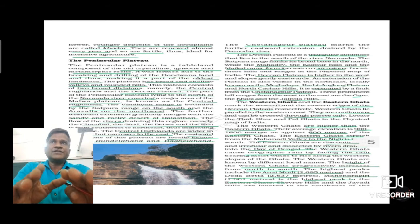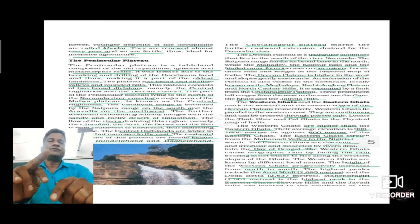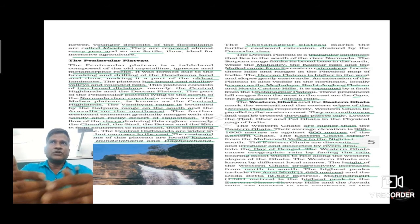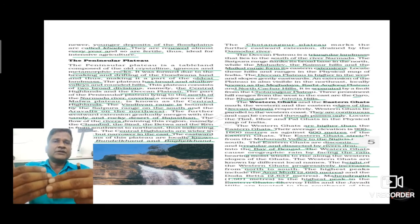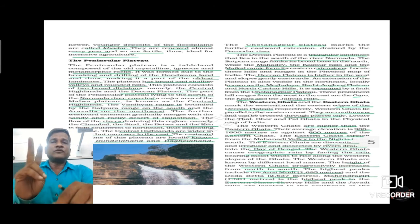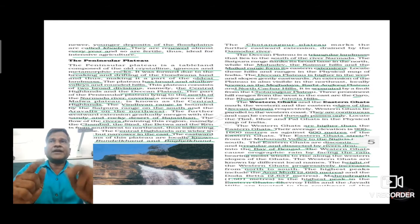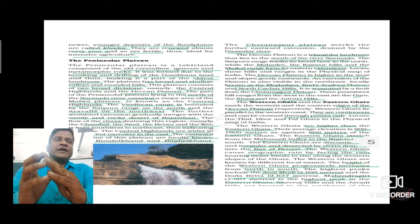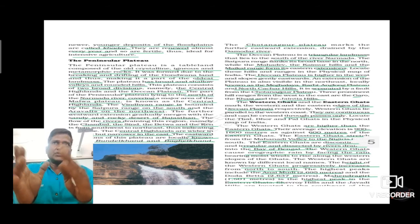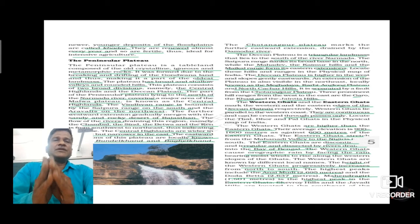The Peninsular Plateau is a tableland completely composed of old crystalline, igneous, and metamorphic rocks. It was formed due to the breaking and drifting of Gondwana Land, which was earlier part of the ancient continent Pangea — its southern part. Age-wise, this is the very oldest landmass situated in our nation. This plateau consists of two broad divisions: first, the Central Highlands, and second, the Deccan Plateau.